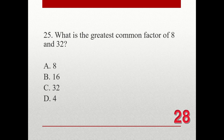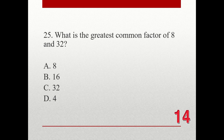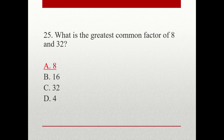Question number 25. What is the greatest common factor of 8 and 32? A. 8. B. 16. C. 32. D. 4. The correct answer is A. 8.